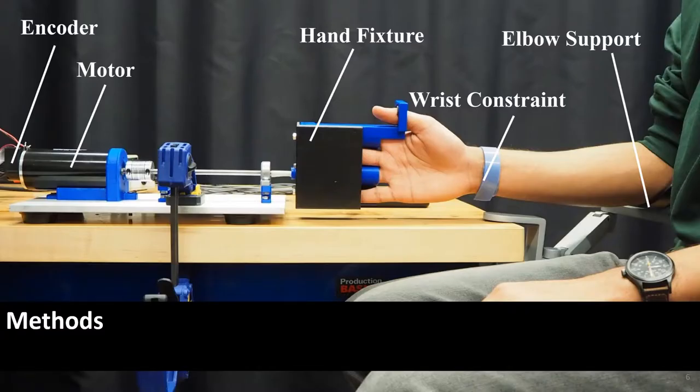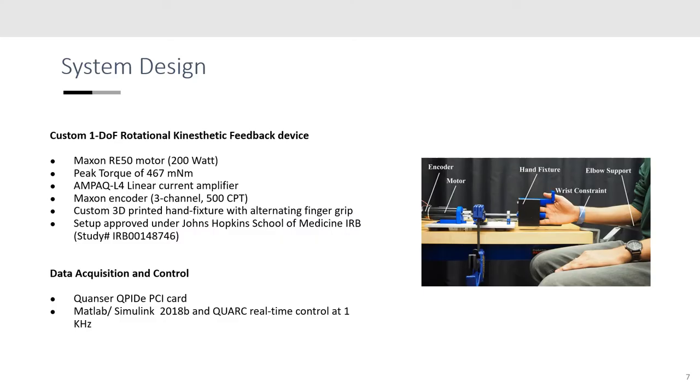We used a custom single degree of freedom direct drive rotary haptic feedback device that uses a Maxon RE50 motor to provide the haptic feedback and a 500 counts per turn encoder to monitor the angular displacement.